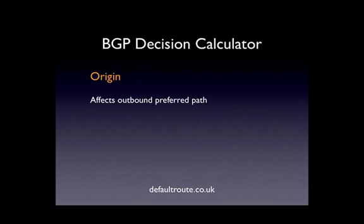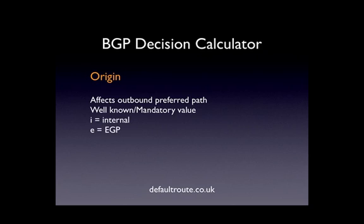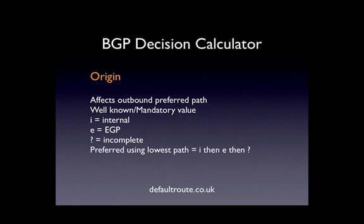Next, origin — we've already covered this. It affects outbound preferred path because you're trusting these routes to have better quality. 'I' internal is where someone has manually typed in the network statement to bring that into BGP — we trust that the most. Next is EGP, not really seen these days. And then question mark — incomplete — where we've redistributed an IGP, a connected route, or something similar. The preference order is I, then E, then question mark.